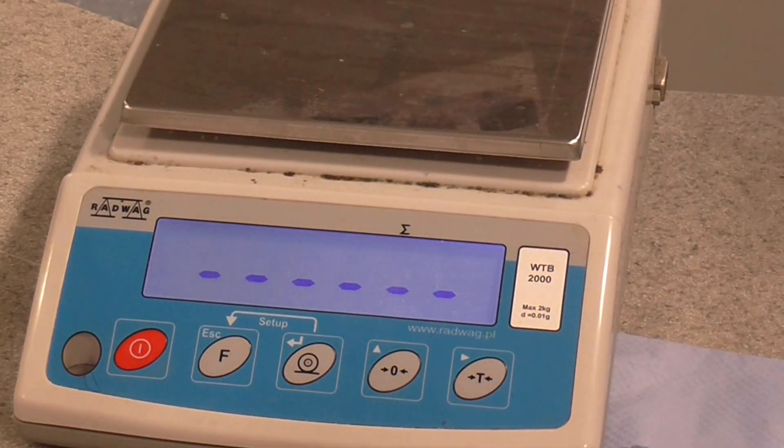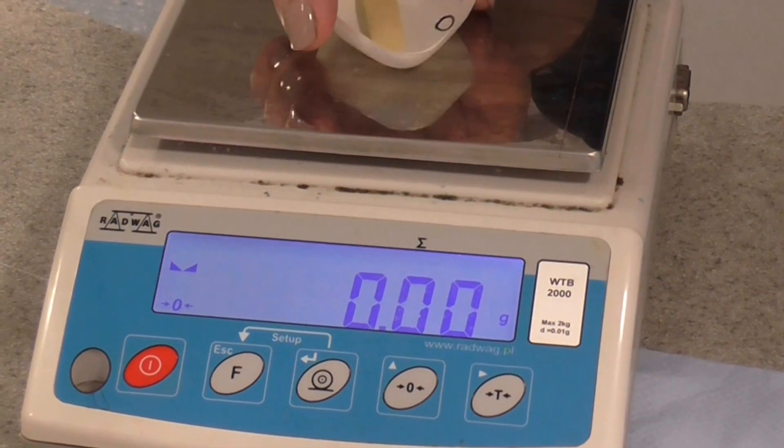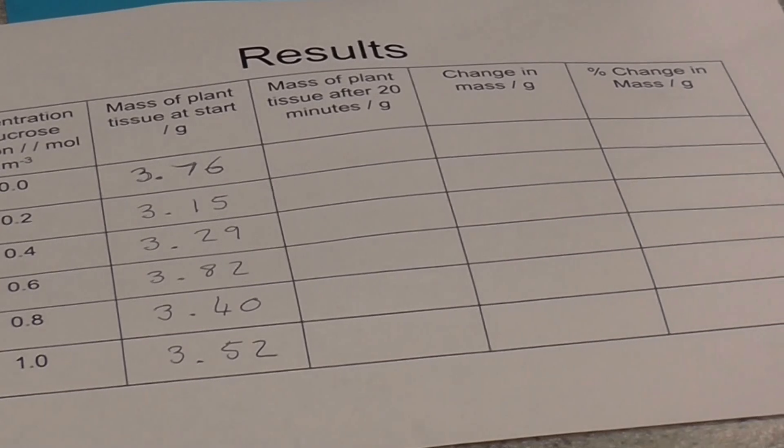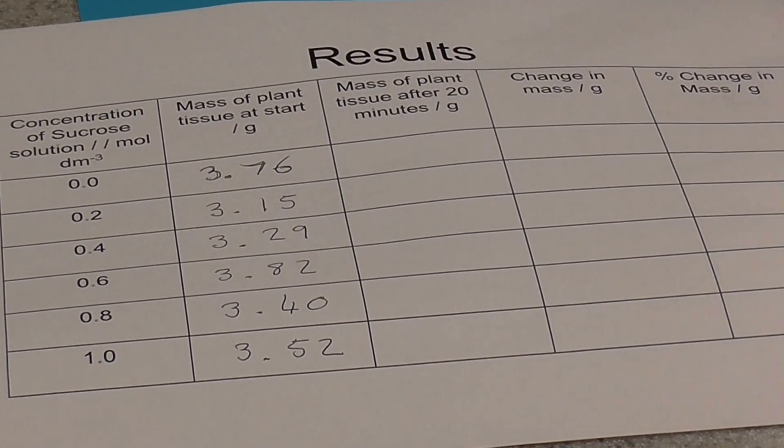Once you've done that, you need to record the mass of each potato chip in your results table. This is the kind of results that you might get. Notice that all the chips have a different mass at the start of the experiment.